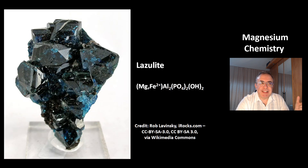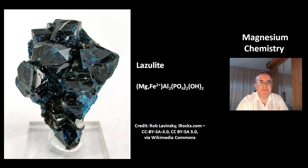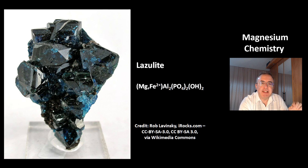This is a picture of the mineral lazulite, which is a magnesium iron aluminium phosphate hydroxide. That was today's video about the chemical element magnesium. Thank you for watching. Have a nice day, bye bye.